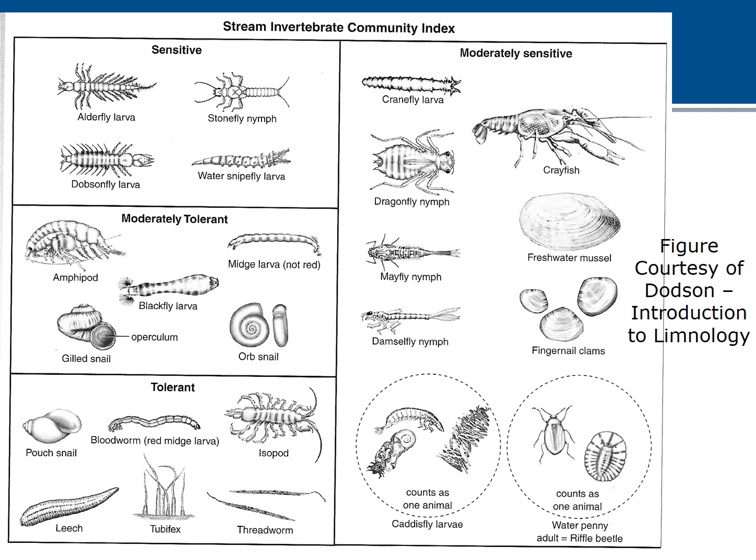The stream invertebrate community index gives examples of sensitive species: alderfly larvae, dobsonflies, stoneflies, and water snipe flies. Moderately tolerant: amphipods, midges, and black flies. Moderately sensitive: crane flies, dragonflies, stoneflies, mayflies, damselflies, crayfish, riffle beetles or water pennies, caddisflies, fingernail clams, and freshwater mussels. With a little pollution, the sensitive ones would definitely be affected; with more pollution, moderately sensitive ones; moderately tolerant ones can deal with a range of conditions but are not super-tolerant. The most tolerant of adverse conditions are leeches, tubifex worms, thread worms, and red midge larvae. In a sufficiently stressed system, even those may be absent.